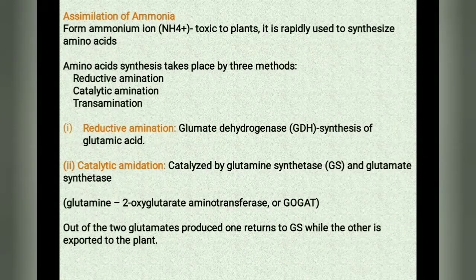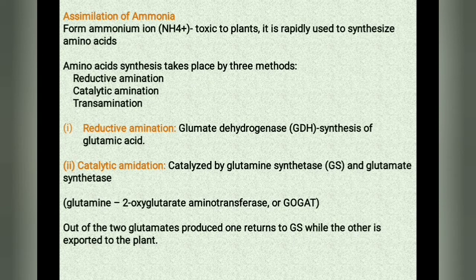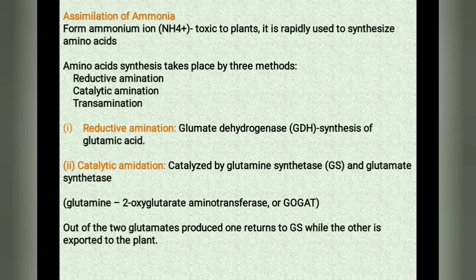Ammonia produced by nitrogenase is immediately protonated to form ammonium ion (NH4+), which is toxic to plants, so it is rapidly used near the site of generation for the synthesis of amino acids. Amino acid synthesis takes place by three methods: reductive amination, catalytic amination and transamination.